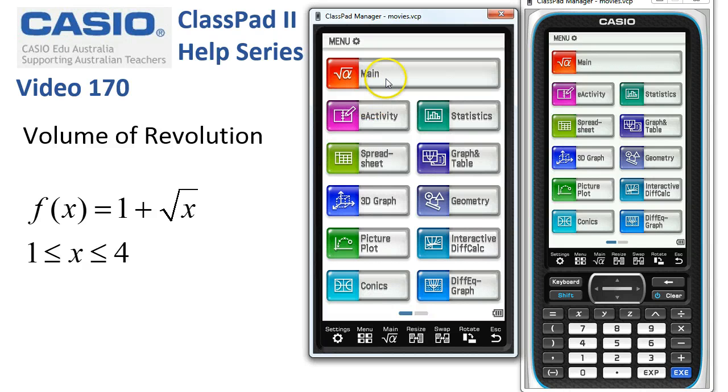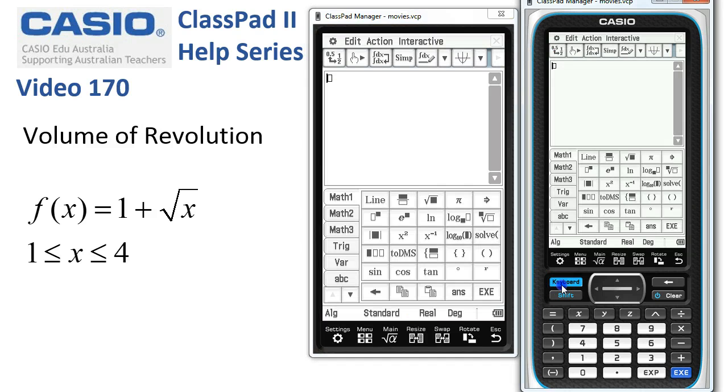Calculating a volume of revolution. So we'll start in main and enter our function. Here we go. 1 plus the square root of x.